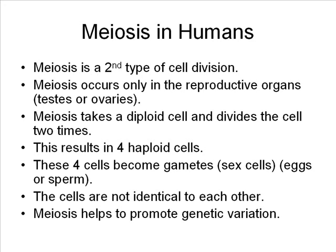Meiosis is the second type of cell division that occurs only in the reproductive organs, either the ovaries or the testes. Meiosis takes diploid cells and divides the cells two times each, resulting in four cells which are haploid. These four cells go on to become gametes or sex cells, which we know more commonly as eggs or sperm. These cells are not identical to each other, and meiosis plays an important role in promoting genetic variation or diversity.